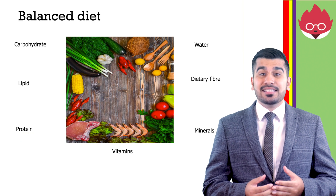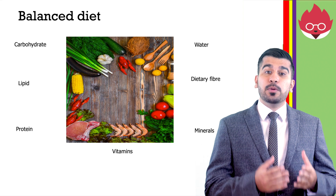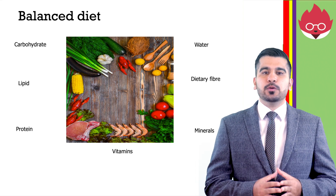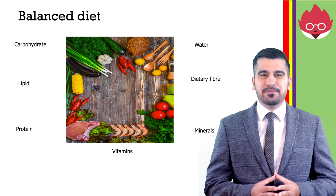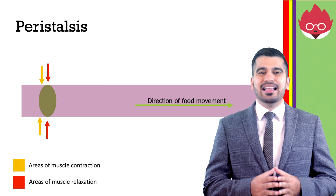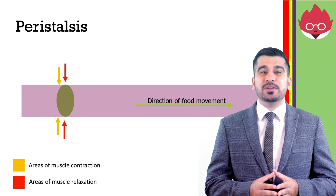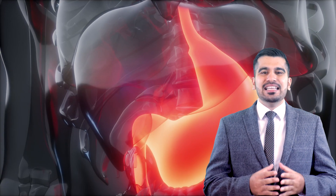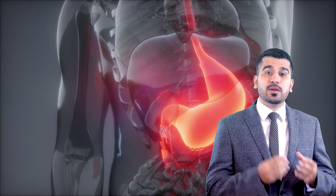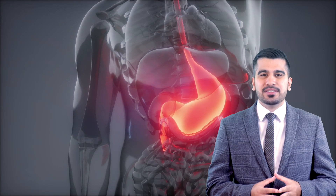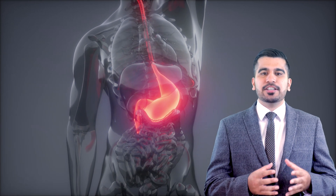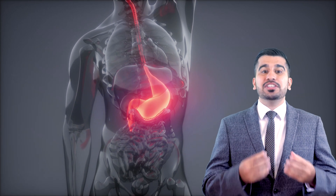For question 1, a balanced diet should include appropriate proportions of carbohydrates, proteins, lipids, vitamins, minerals, water, and dietary fiber. For question 2, movement along the alimentary canal happens via muscular contractions known as peristalsis. Food leaving the stomach is acidic. However, the enzymes in the small intestine work better in alkaline conditions. Therefore, bile neutralizes stomach acid as it contains sodium hydrogen carbonate, which is an alkali.